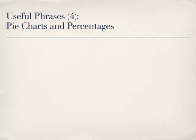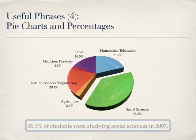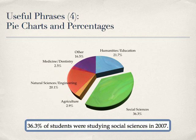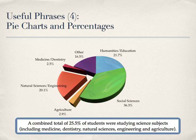Finally, let's practice describing the pie chart showing the percentage of students in Japan studying various major subjects. Here are some useful phrases you can use: '36.3% of students were studying social sciences in 2007.' 'A combined total of 25.5% of students were studying science subjects, including medicine, dentistry, natural sciences, engineering and agriculture.'